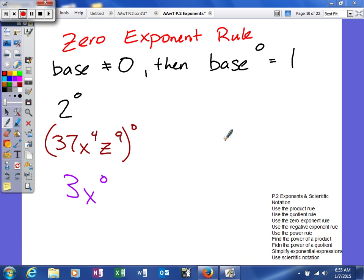Alright, next we're going to talk about the zero exponent rule. So, what you need to know is, as long as your base is not equal to zero, then anything to the zero power will give us one.